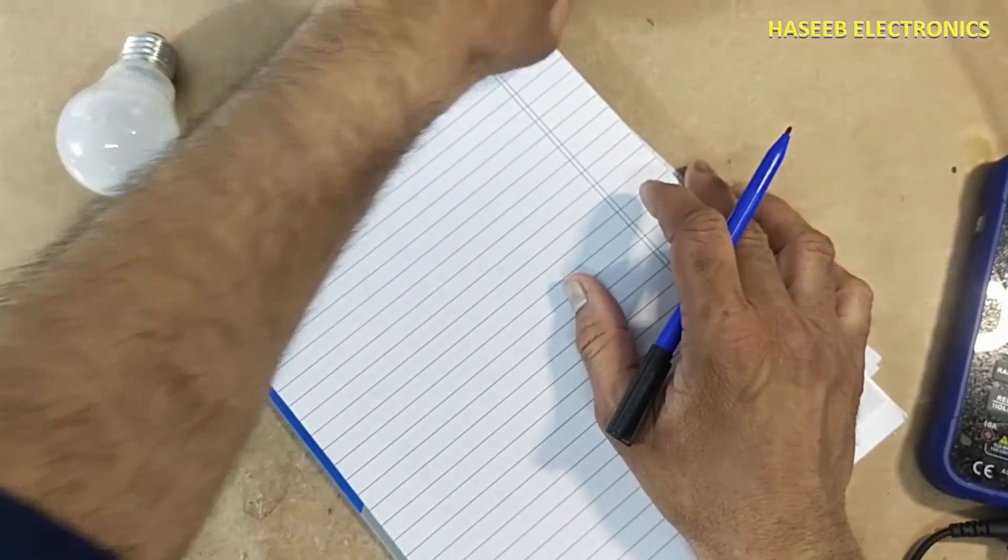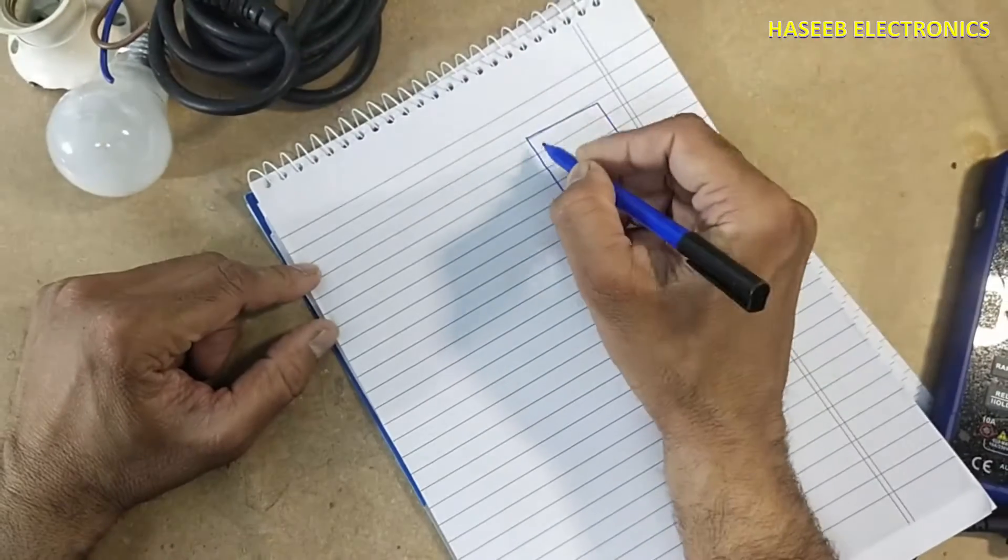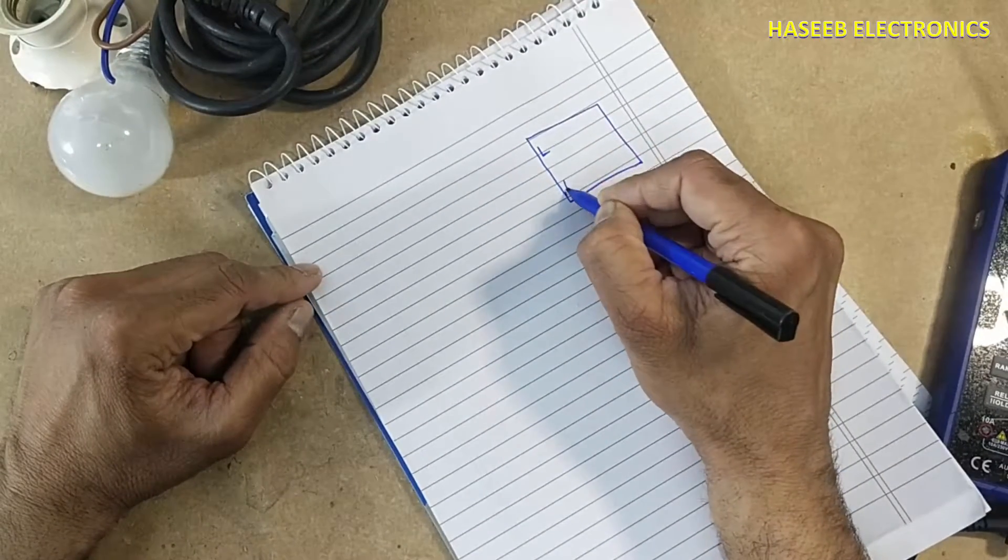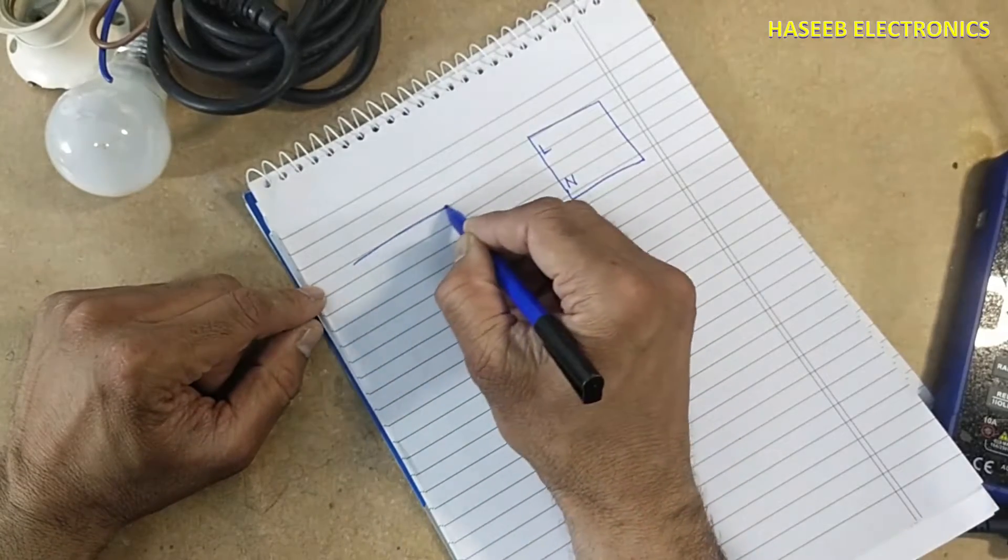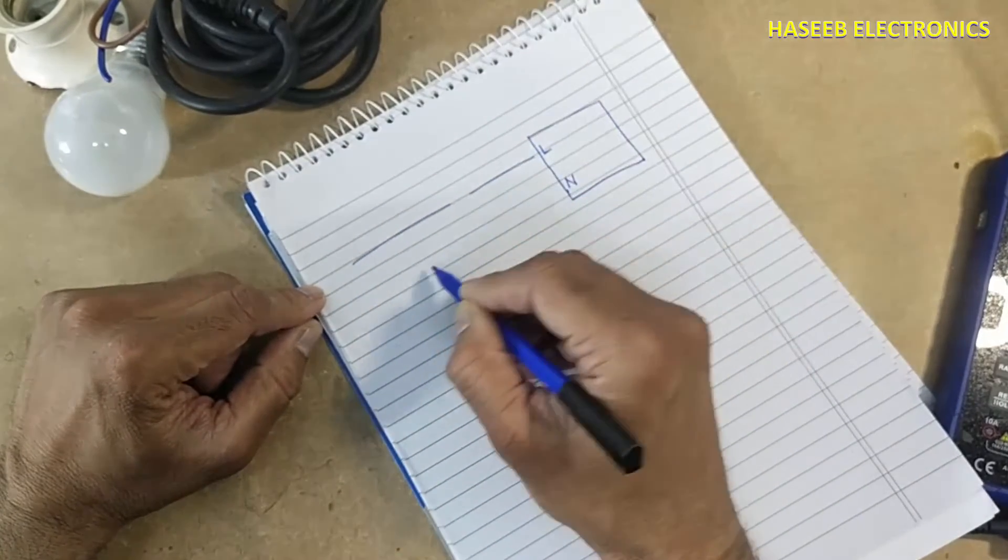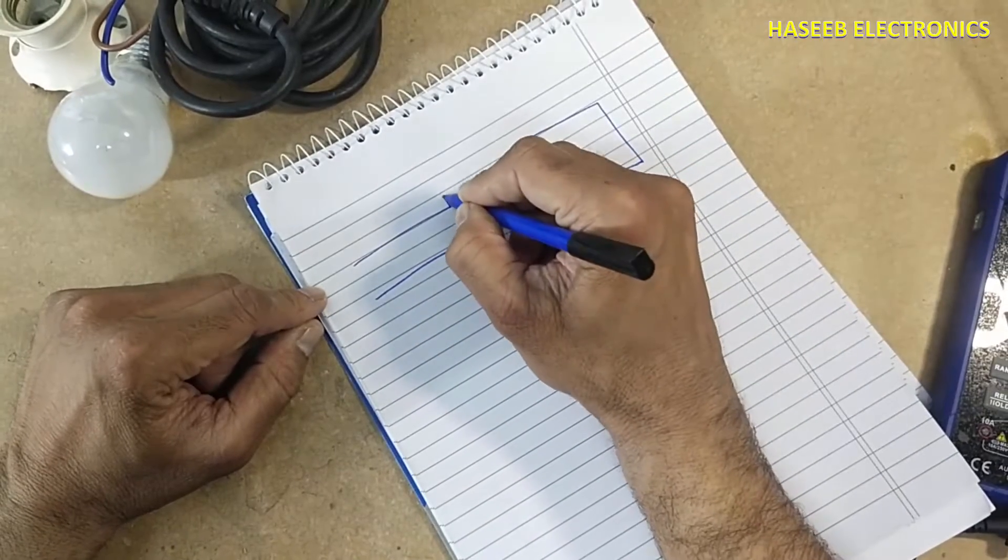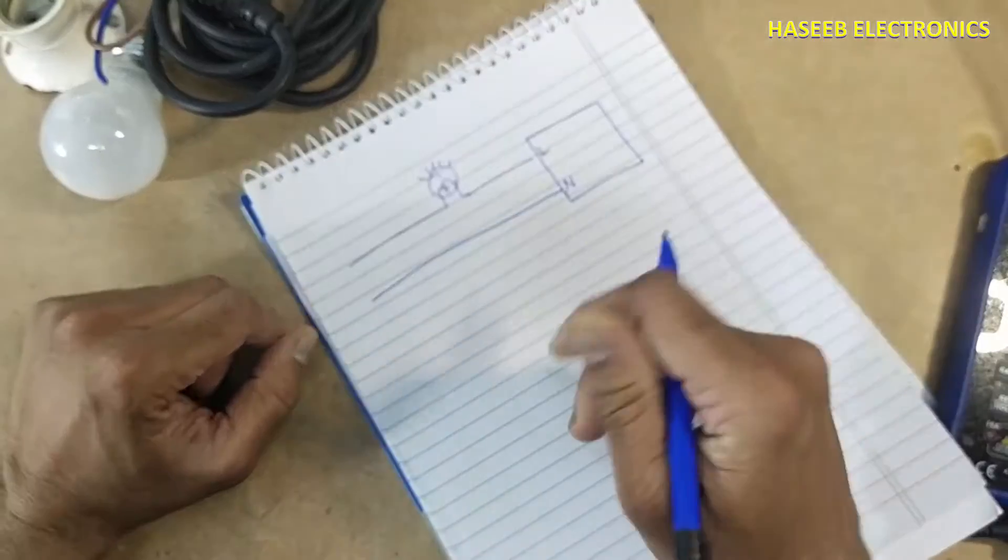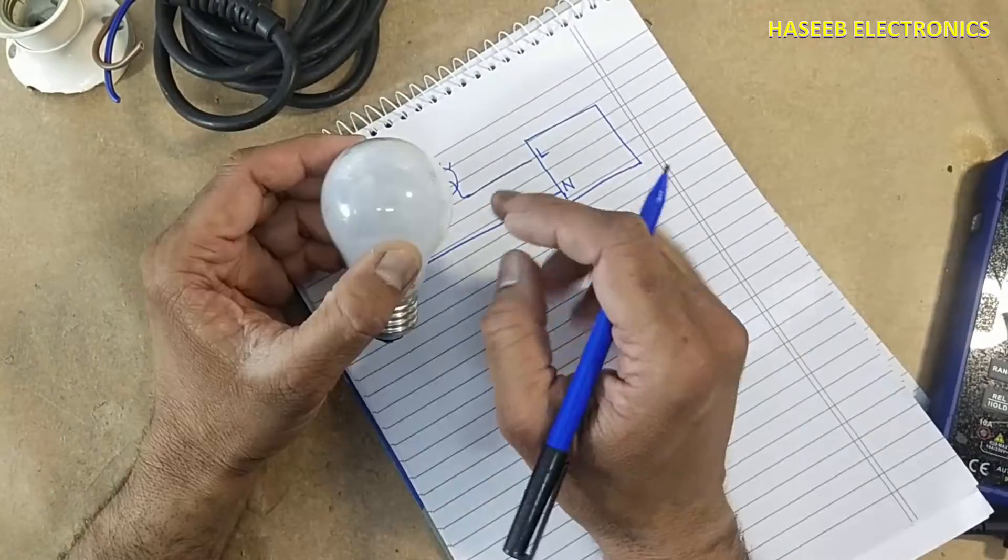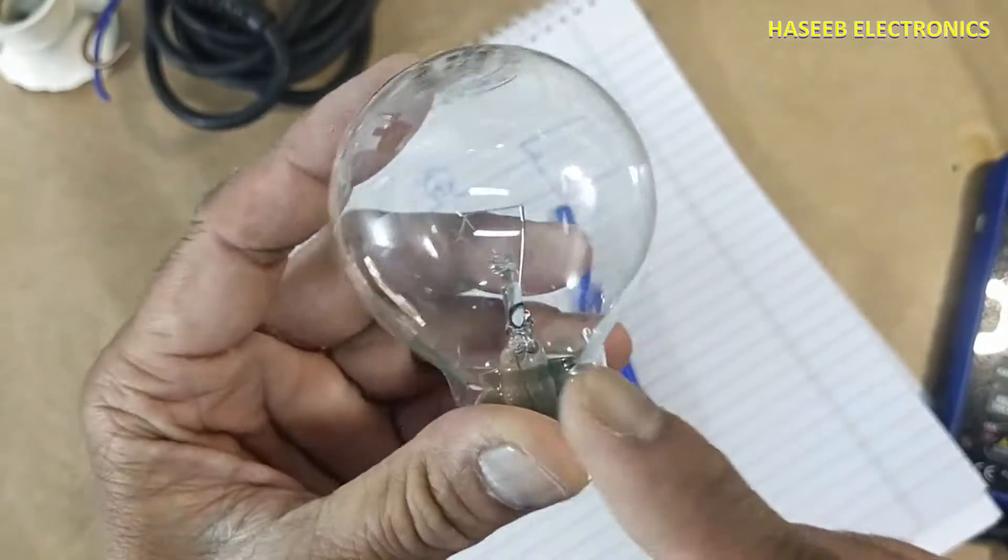We'll make the simplest series test lamp. This is the PCB with line and neutral - we provide line voltage here, neutral here. In between, we connect a series lamp. It's a normal tungsten lamp, not an LED lamp or energy saver - it's a simple filament lamp.